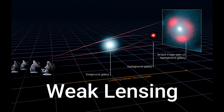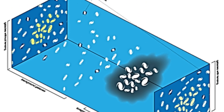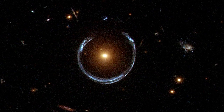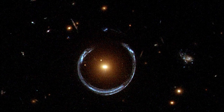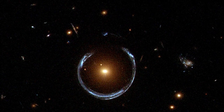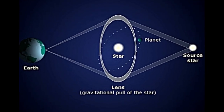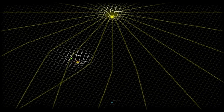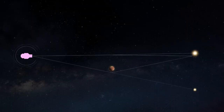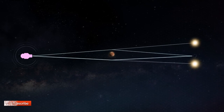Weak lensing: when the gravitational lensing effect is subtle, it causes a slight distortion in the shapes of background objects without producing multiple images. This distortion is often measured statistically over a large population of background objects, revealing information about the distribution of dark matter in the foreground mass. Microlensing: this occurs when a compact object, such as a star, passes in front of a more distant light source. The gravitational field of the foreground star acts as a lens, causing a temporary increase in brightness of the background source. Microlensing is often used to detect and study objects like dark matter in our galaxy.